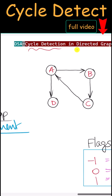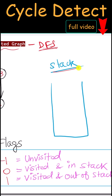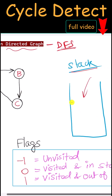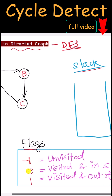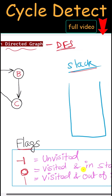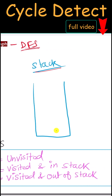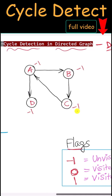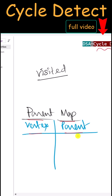Let's see how we can detect a cycle in a directed graph using DFS. DFS means we need a stack which will keep track of the visited nodes and also help us in backtracking. We're going to use these flags: negative 1 means unvisited node, 0 means the node is visited and is in our stack, and 1 means the node is visited and is out of the stack. Initially all nodes are unvisited so their flag will be negative 1. We also need a parent map to track each vertex and their parent, and we'll keep track of visited nodes.